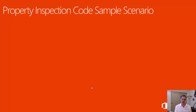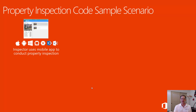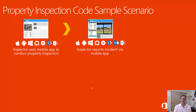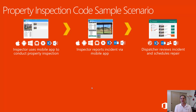Let me walk you through the actual scenario of the property inspection code sample. The scenario starts with one of the inspectors at Contoso Property Management going out in the field, on site, and arriving at one of the properties they manage. He conducts his inspection and learns about which inspections he needs to do next via the mobile app. The inspector then theoretically finds an incident at a property that needs to be repaired. The incident is reported through the mobile app and the inspector can take pictures as well as provide notes to the dispatcher on what the incident is and how it needs to be repaired.